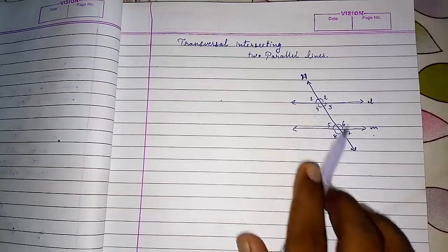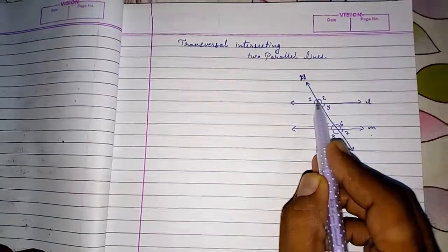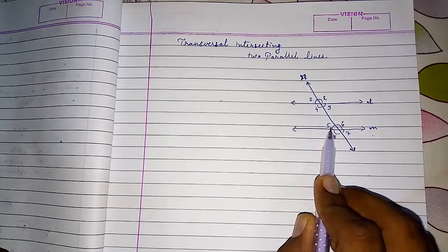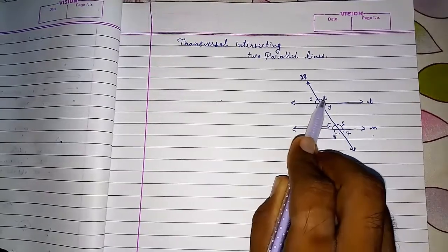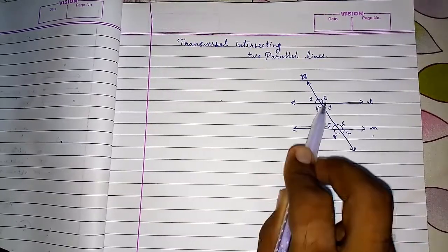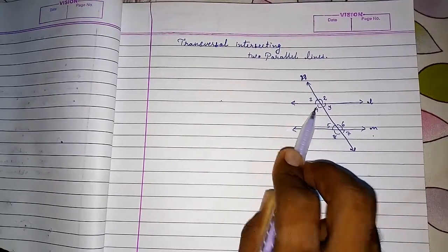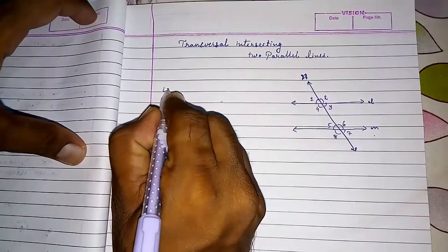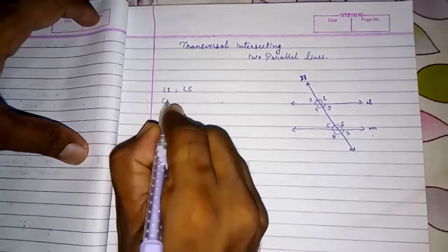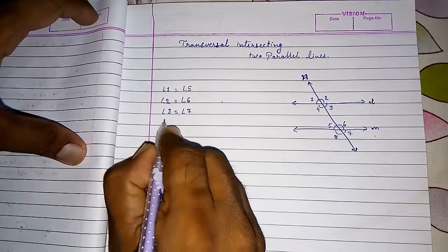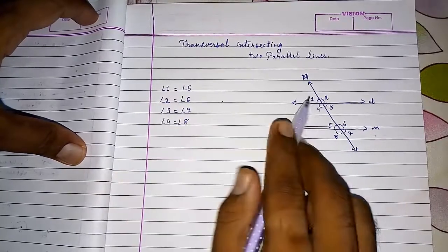If any single angle is given to you, you can find all the remaining angles. Look here — in the upper left corner of the first line you have angle one, and in the upper left corner of the second line you have angle five. Angle one is always equal to angle five. Similarly, angle two equals angle six, angle three equals angle seven, and angle four equals angle eight.